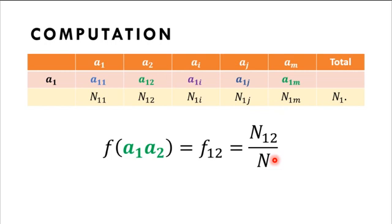Same is true for getting the frequency of other genotypes. So, say for example, you want to get the frequency of the A1, A2 genotype, this is how we get, and so on, and so forth.